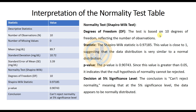For the Shapiro-Wilk normality test interpretation: the test is based on 10 degrees of freedom, reflecting the number of observations. The Shapiro-Wilk statistic is 0.97185, which is close to 1, suggesting that the data distribution is very similar to a normal distribution. The p-value is 0.90743. Since the p-value is greater than 0.05, the null hypothesis of normality cannot be rejected. At the 5% significance level, the data appears to be normally distributed.